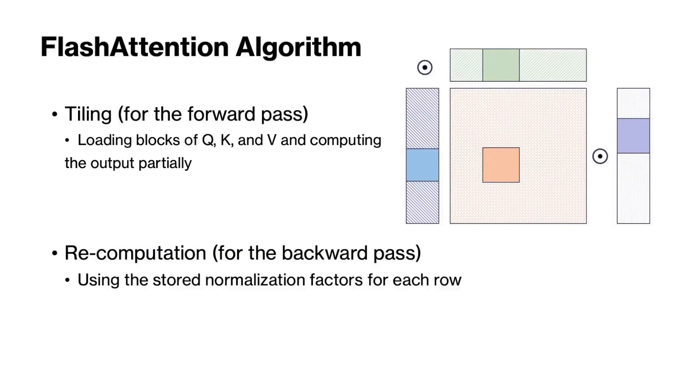Flash attention significantly reduces the memory access using a tiling approach that computes the output of attention partially in two nested for loops. Furthermore, for backward pass, it's more efficient to simply recompute the attention as long as we have stored the normalization factors of softmax for each row.